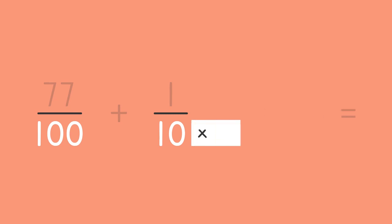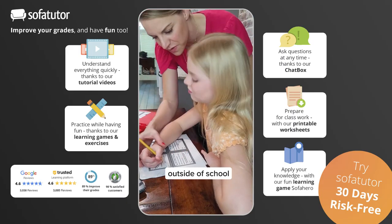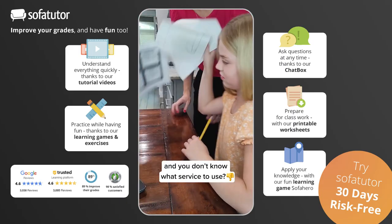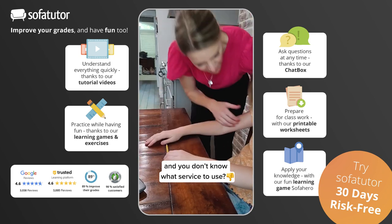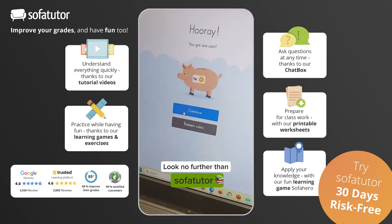We need to multiply the tenths fraction by ten because it is the least common factor. Does your kid need extra help outside of school and you don't know what service to use? Look no further than SofaTutor.